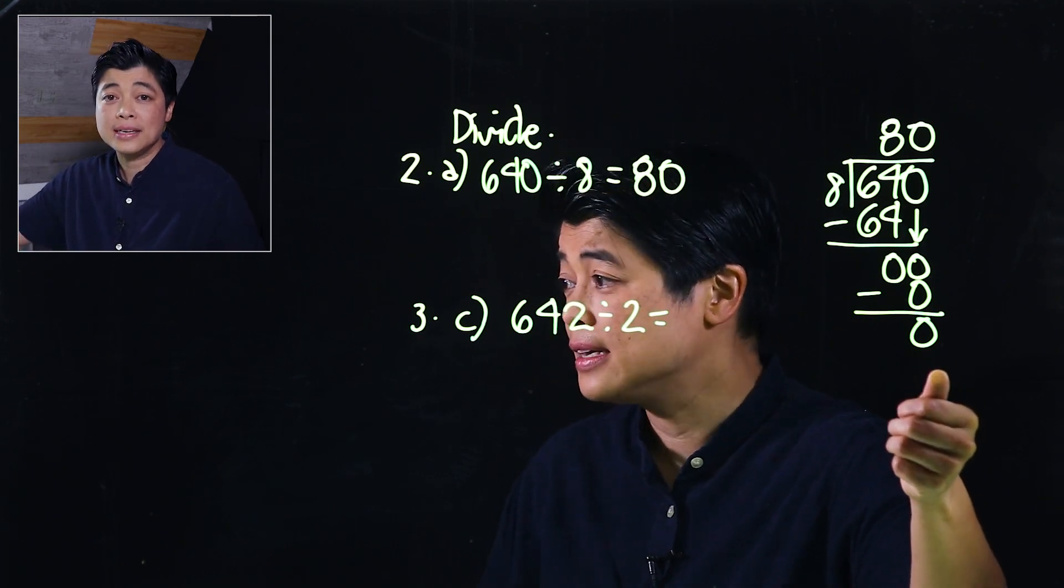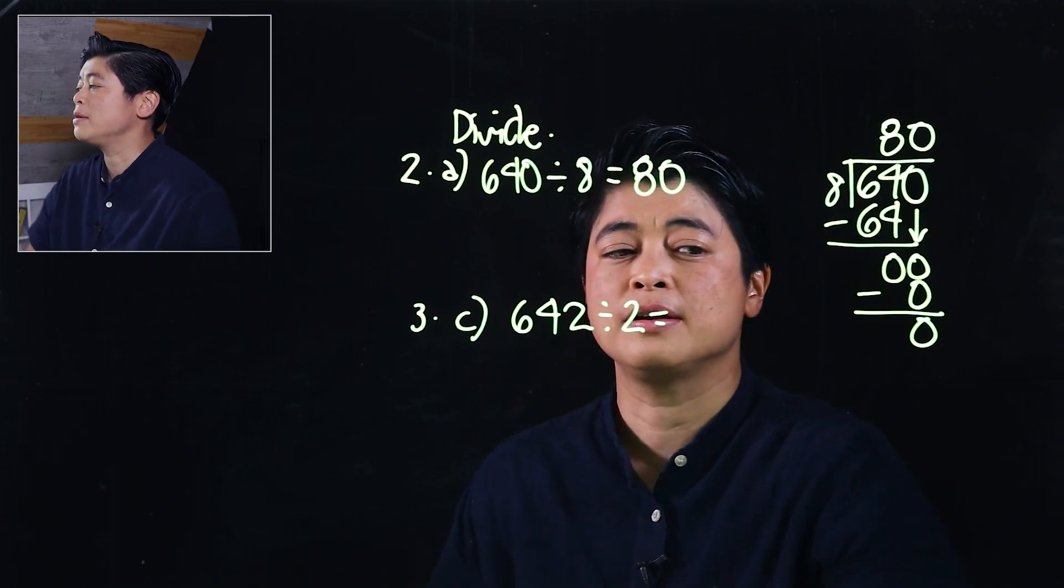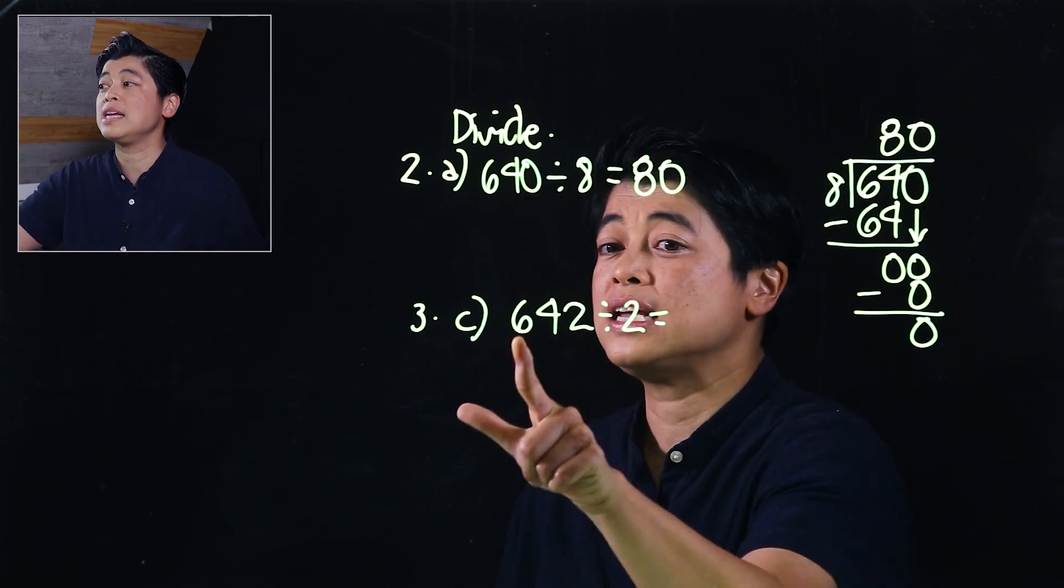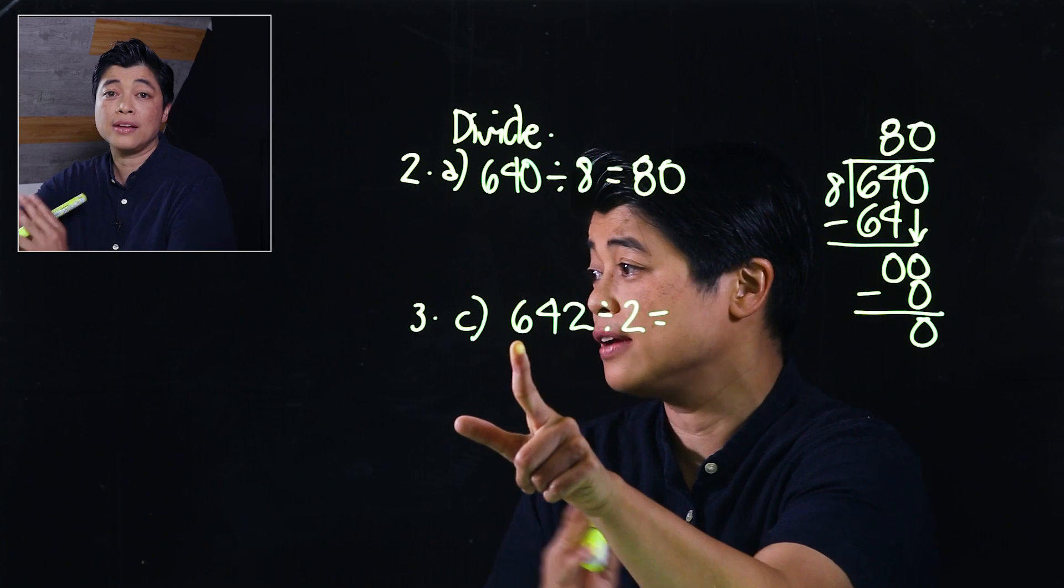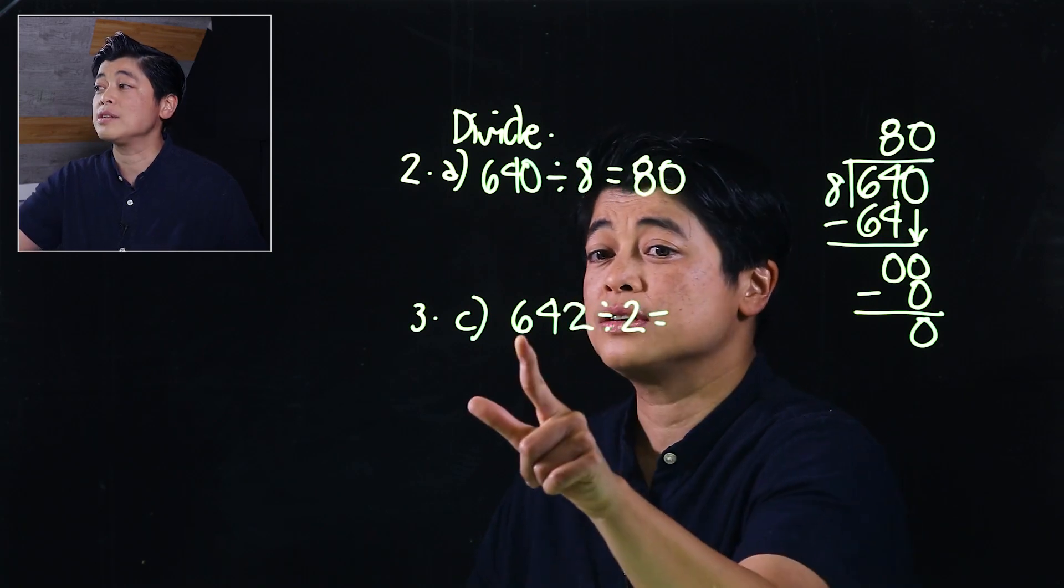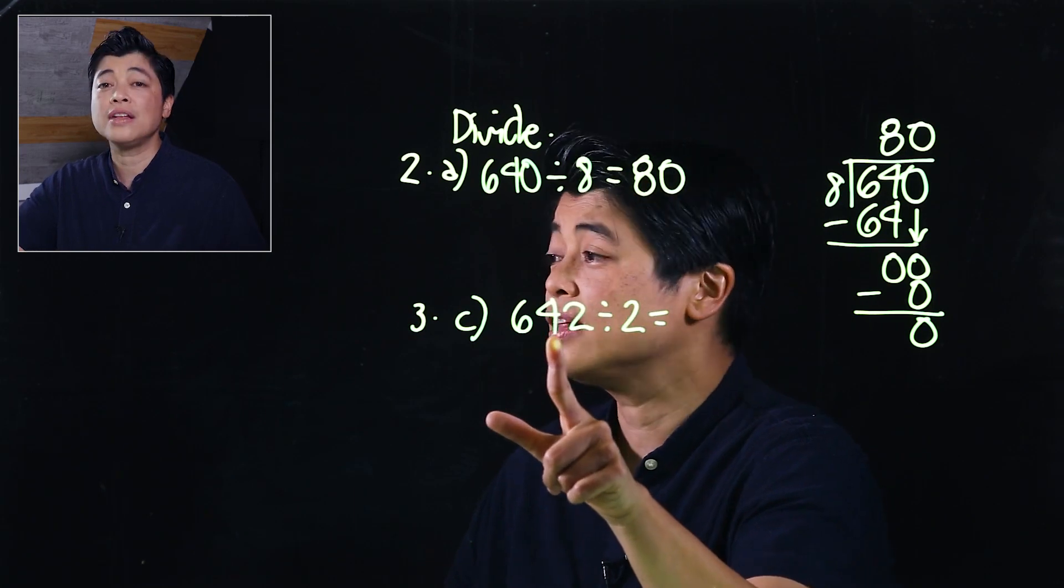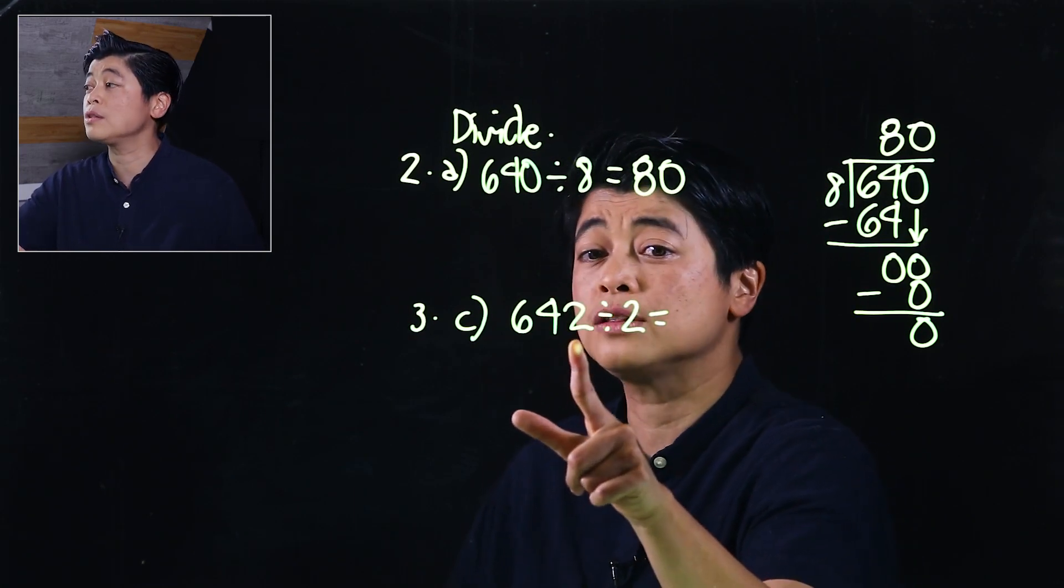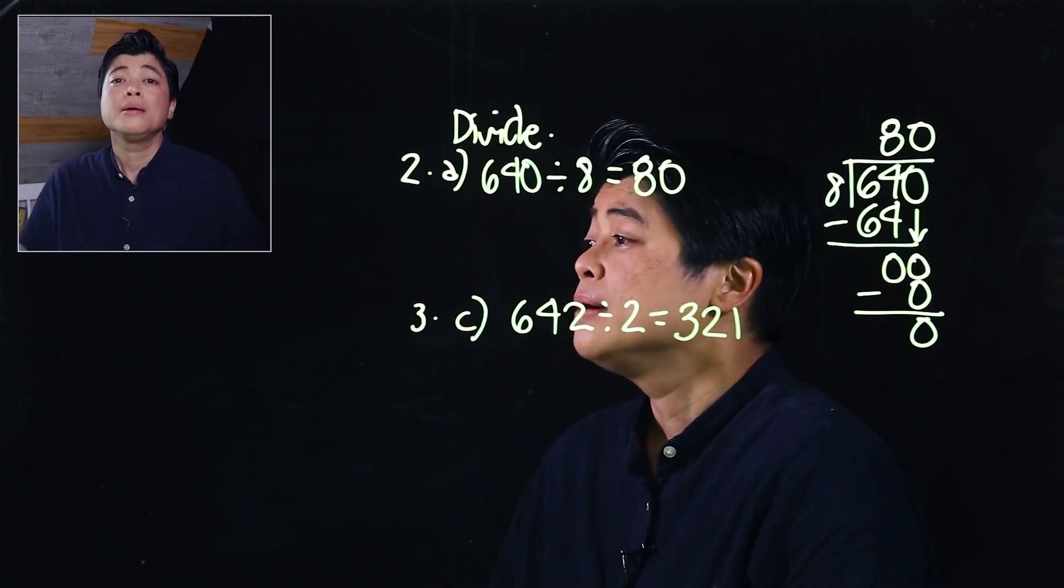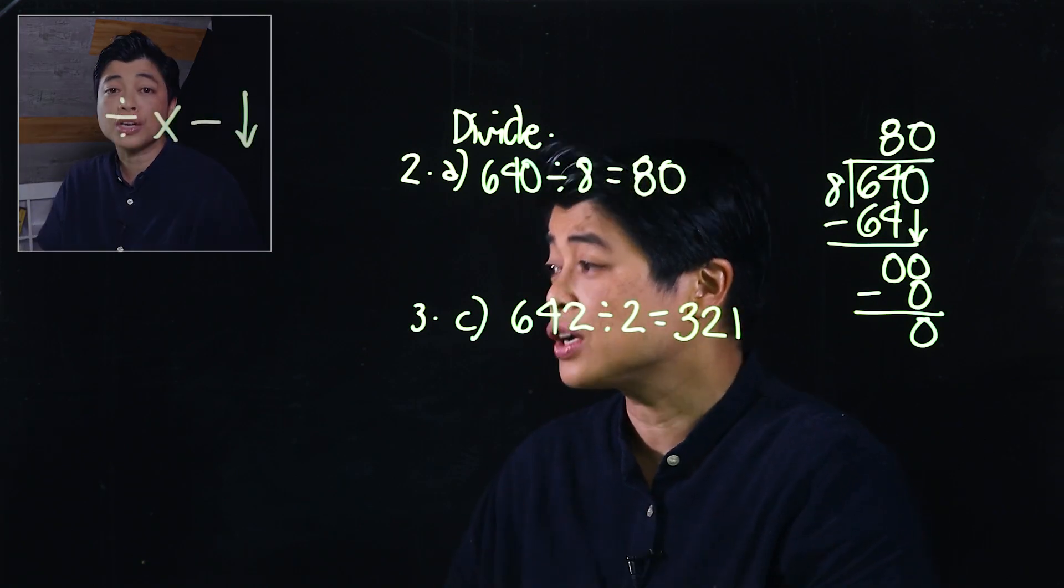The other problem is 642 divided by 2. Again, if you can show your kids how to do this mentally, it's from left to right. If these numbers are each divisible because it's even, then it's easy to teach. This will be 6 divided by 2 is 3, and then 4 divided by 2 is 2, and 2 divided by 2 is 1. So that would make it 321.